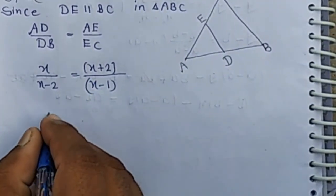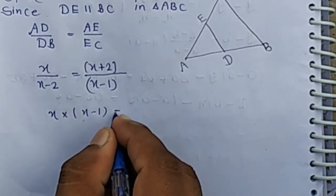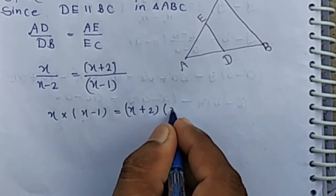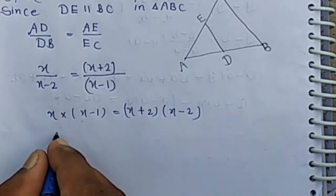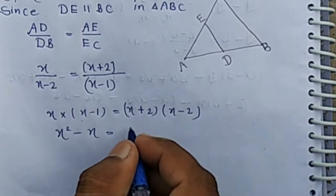Cross multiply: X into X minus 1 equals X plus 2 into X minus 2. Then we have X squared minus X, and X squared minus 4, using the formula A squared minus B squared.